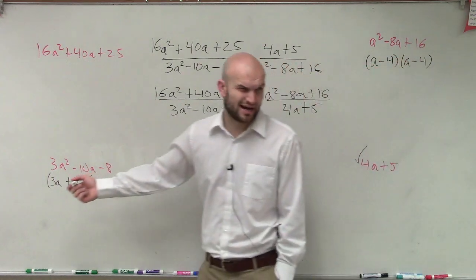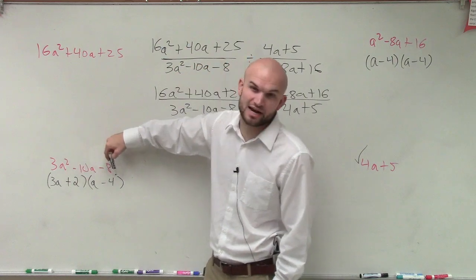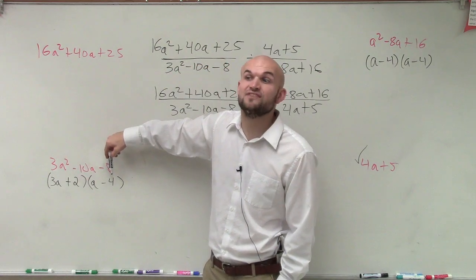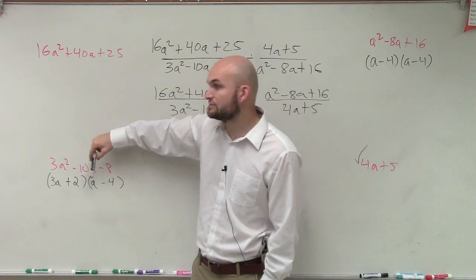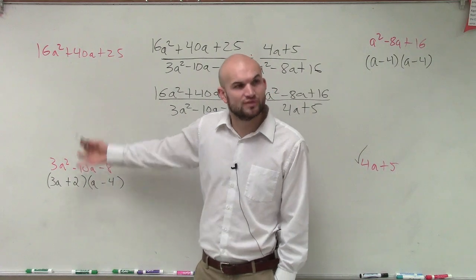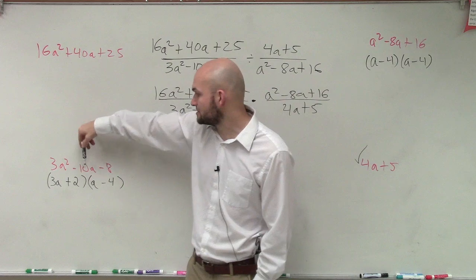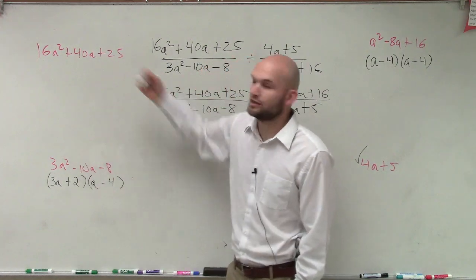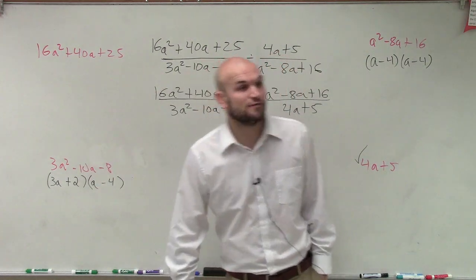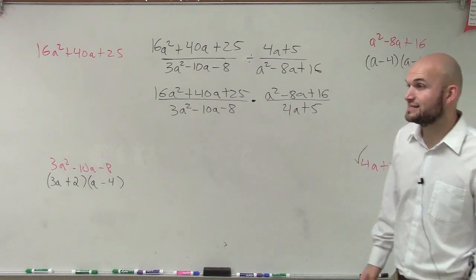How did I know that? Well, what I did is I did 3a times negative 4, which is negative 12a, and then I did a times 2, which is positive 2a. Well, negative 12a plus 2a is negative 10a. Then I look at this and I notice this has a couple perfect squares in it, doesn't it? I have 16, that's a perfect square. 25, that's a perfect square, right?